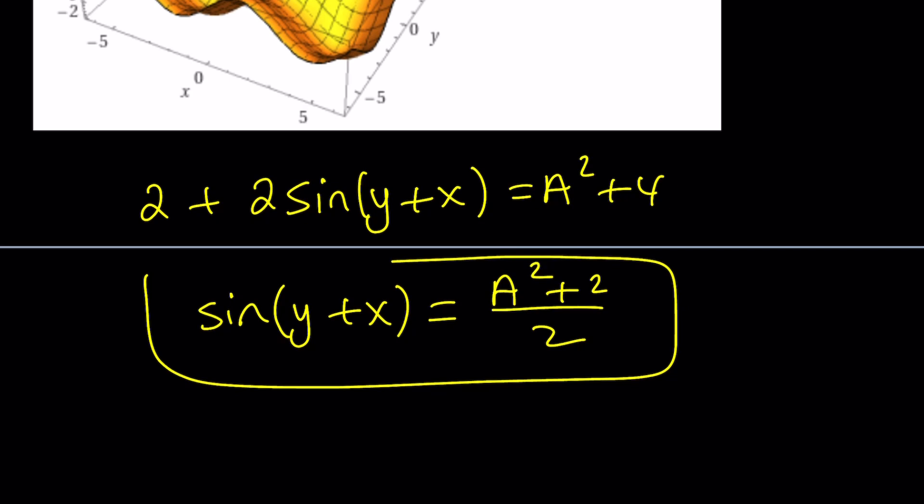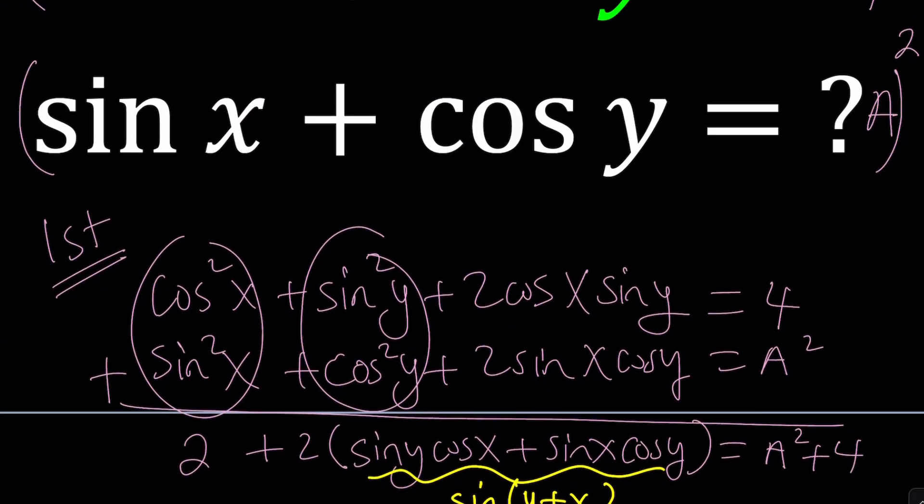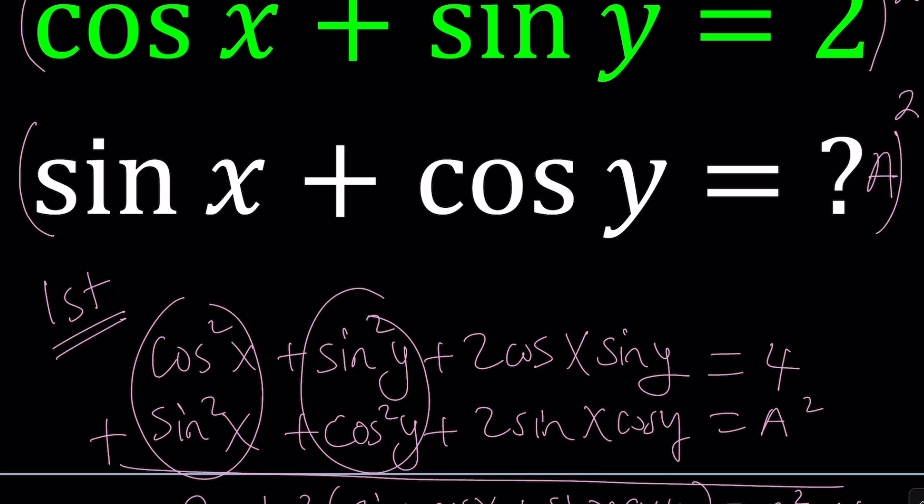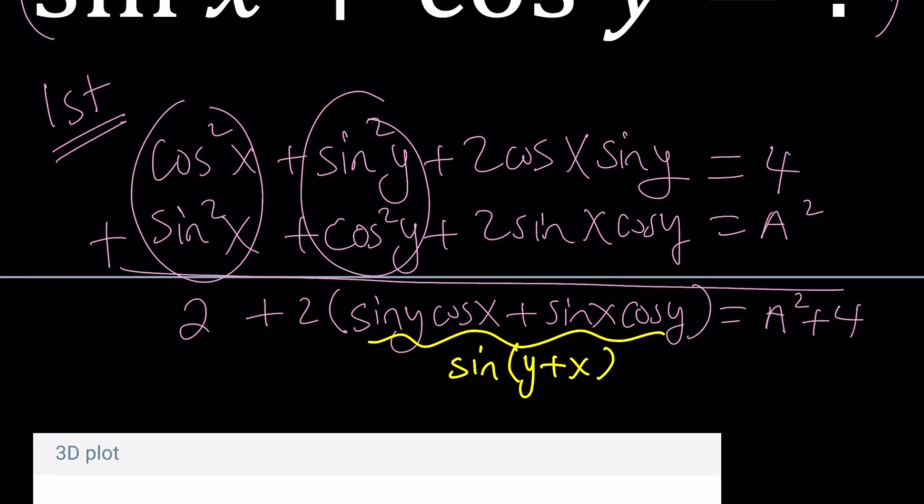2 plus 2 times sine of y plus x equals A squared plus 4. And obviously, we could go ahead and subtract 2 from both sides and divide by 2. That would give us sine of y plus x as A squared plus 2 divided by 2. So, that gave us sine of y plus x. Didn't give us the second expression, which is A. So, we're trying to solve for A, basically. But at least we got something.